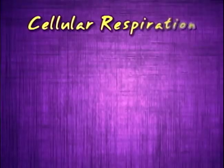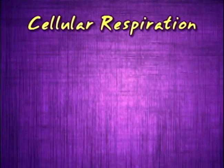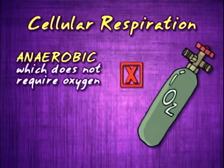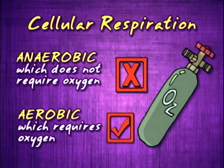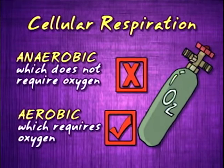Cellular respiration can occur in two types: anaerobic, which does not require oxygen, and aerobic, which requires oxygen. In most organisms like us, for example, respiration takes place in the presence of oxygen. Thus, it is classified as aerobic respiration.